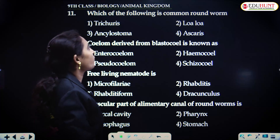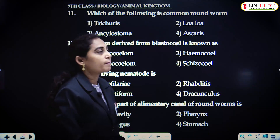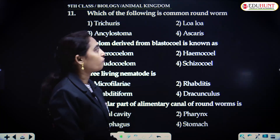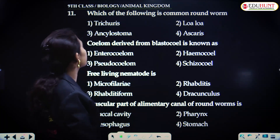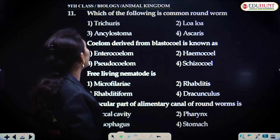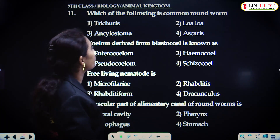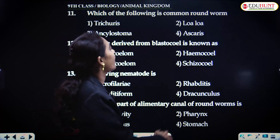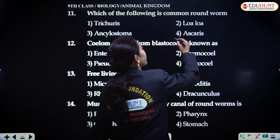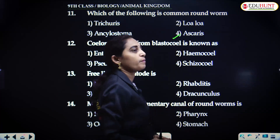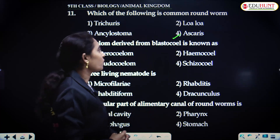Which of the following is the common roundworm? Among Tricuris, Ankylostoma, Loa loa, and Ascaris — Ascaris is the common roundworm.